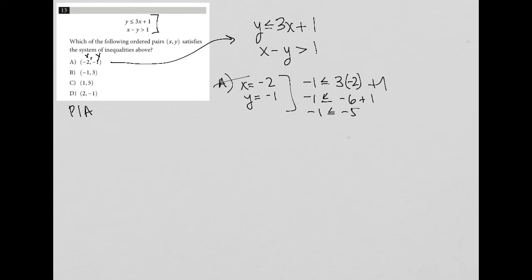Now we're going to go to choice B. With choice B here, same thing. X equals negative 1, y equals positive 3. So when I try choice B, I'm going to plug those numbers into my first inequality.